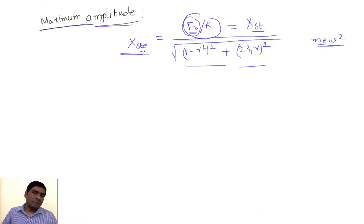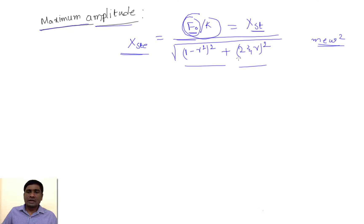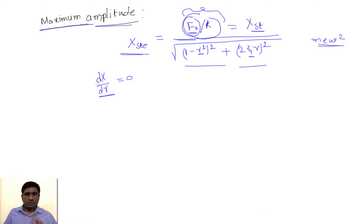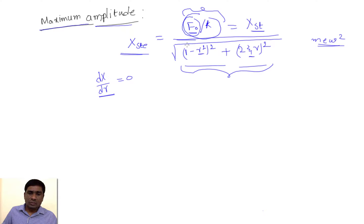So far we have seen the amplitude at the steady state as well as the amplitude at the static state. But what would be the maximum amplitude? For a given damping, this amplitude depends only on the value of r, where r is ω/ωₙ, and f₀/k is a constant. To find the maximum or minimum value, we differentiate with respect to the dependent variable and set it equal to zero.